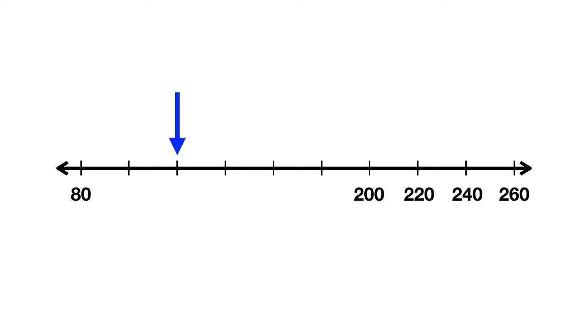You had to realize that on this number line, moving one dash over meant you were adding 20. You could find that because to go from 200 to 220, you have to add 20. To move from 220 to 240, you add 20. 240 to 260, you're adding 20.